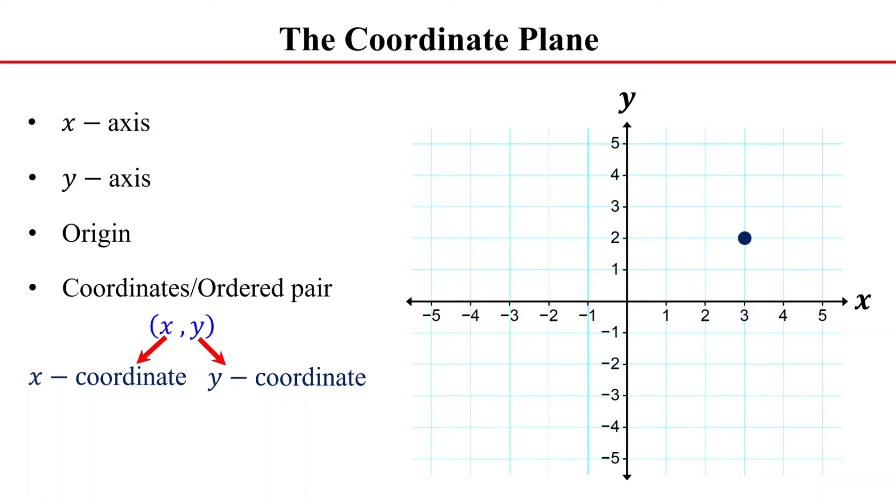For example, this point is represented by the ordered pair 3 comma 2. We can also say the coordinates of this point are 3 comma 2. Here, 3 is the x-coordinate and 2 is the y-coordinate of the point.